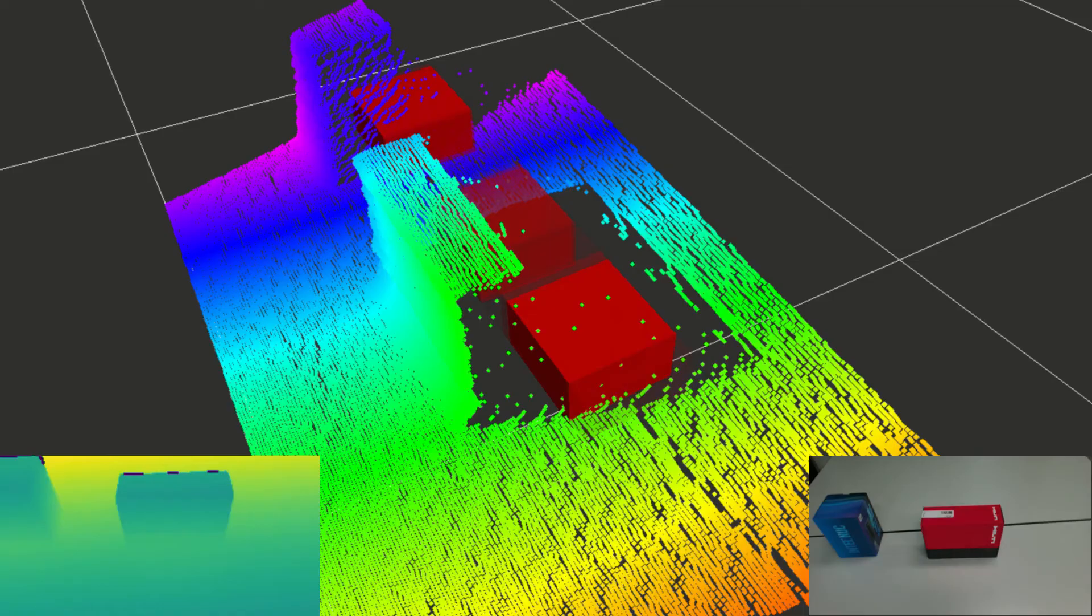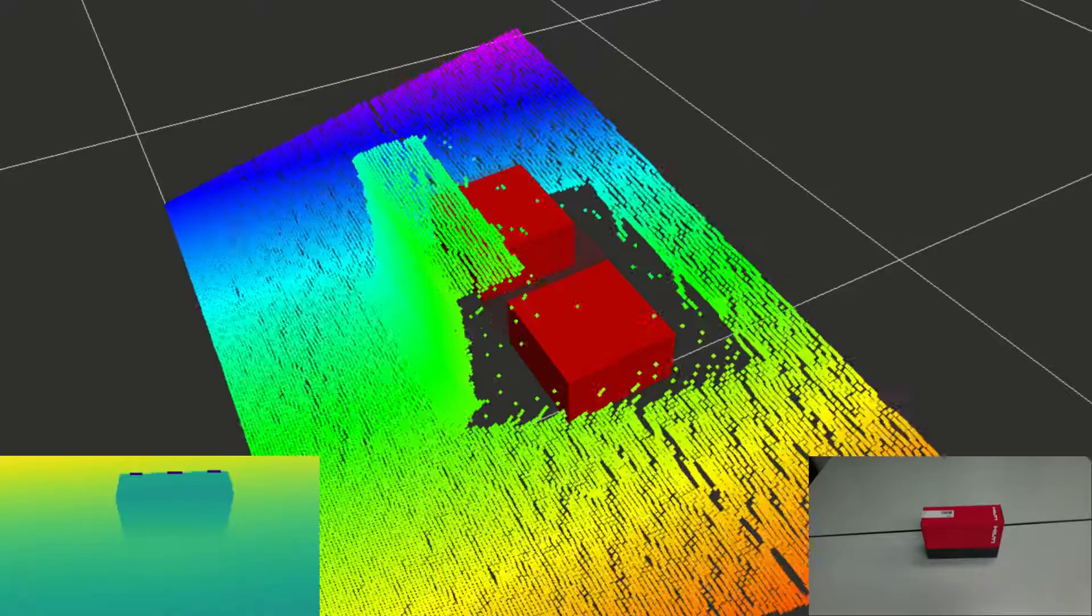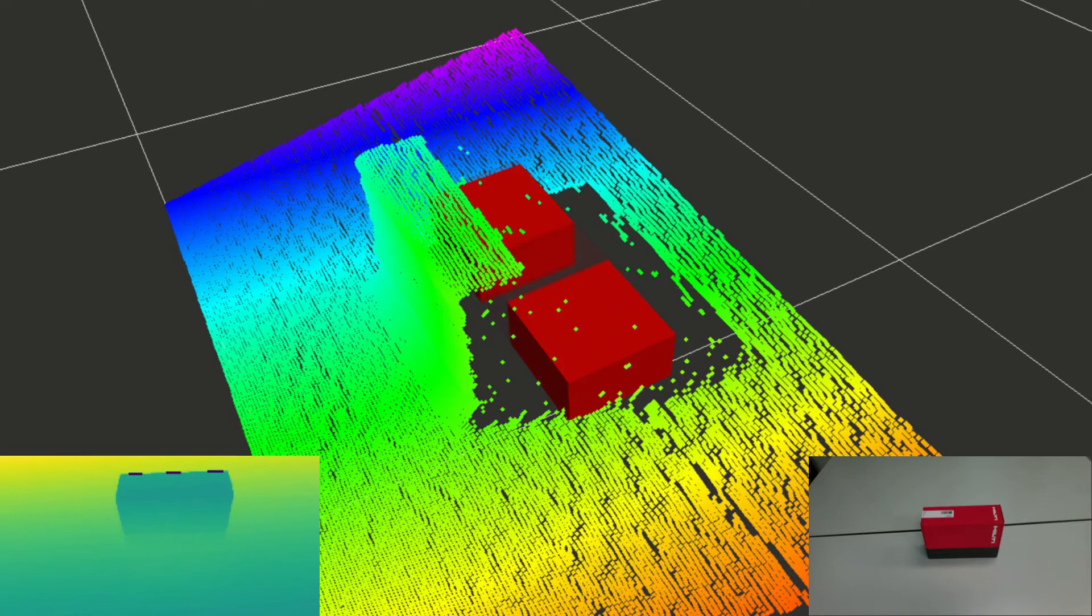We now remove one obstacle and reveal that the target object is not hidden behind it. The particle distribution collapses and only the particles behind the second obstacle remain.